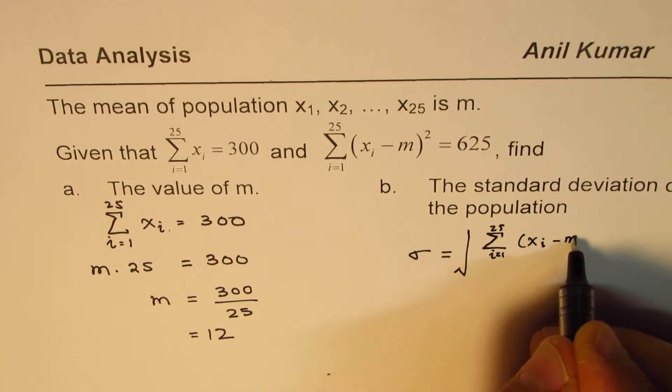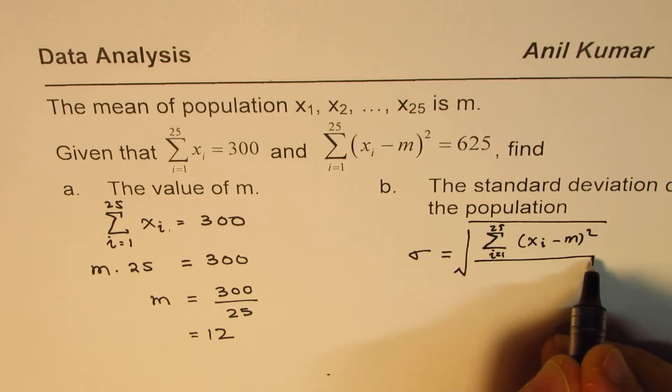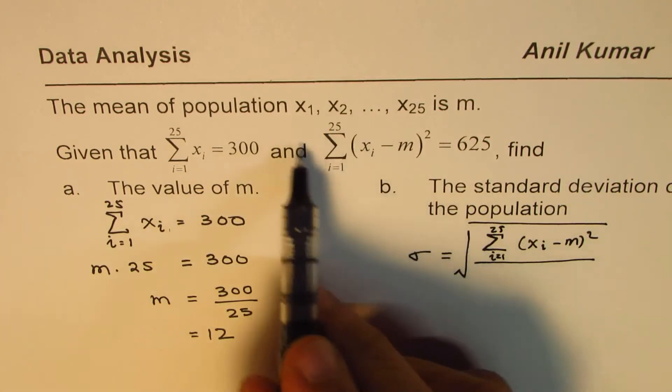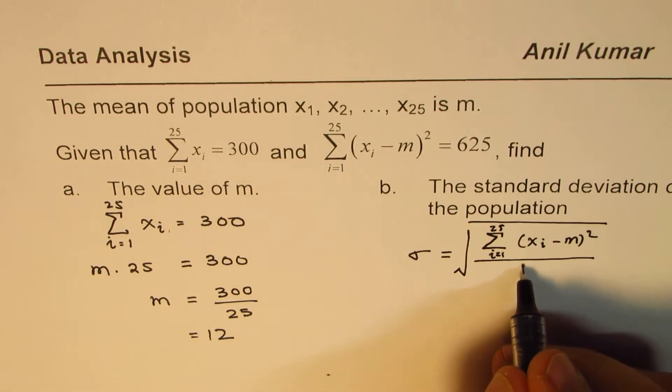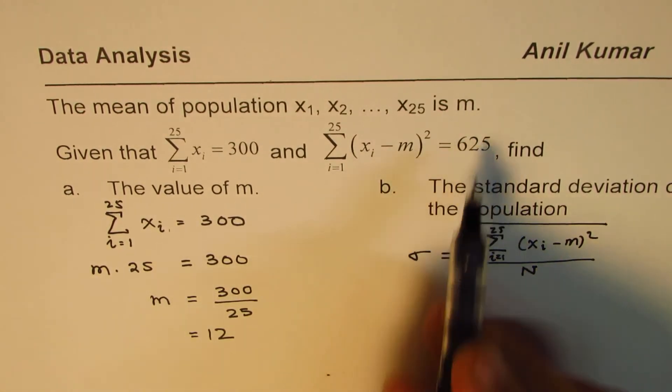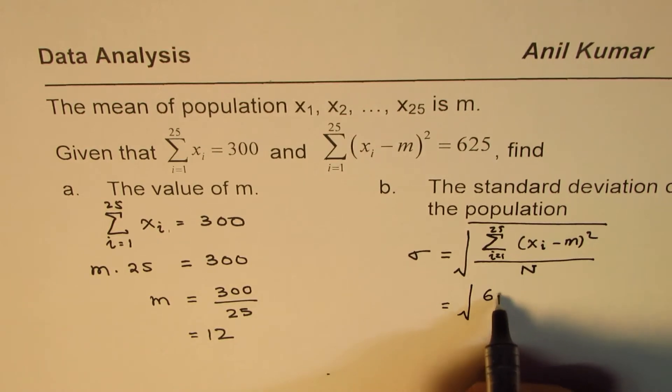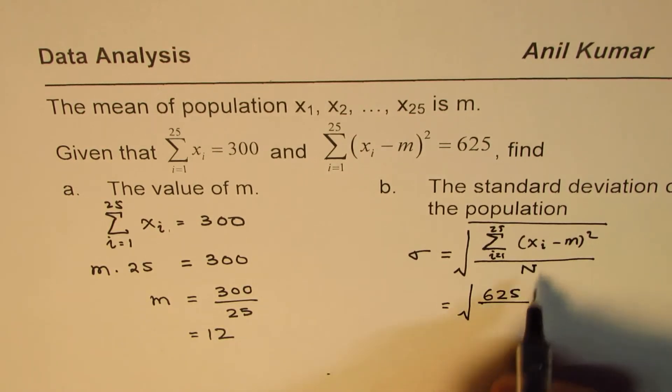For (xᵢ - m)² divided by the number of elements in the population which is n. That is the formula, so we can apply it directly.